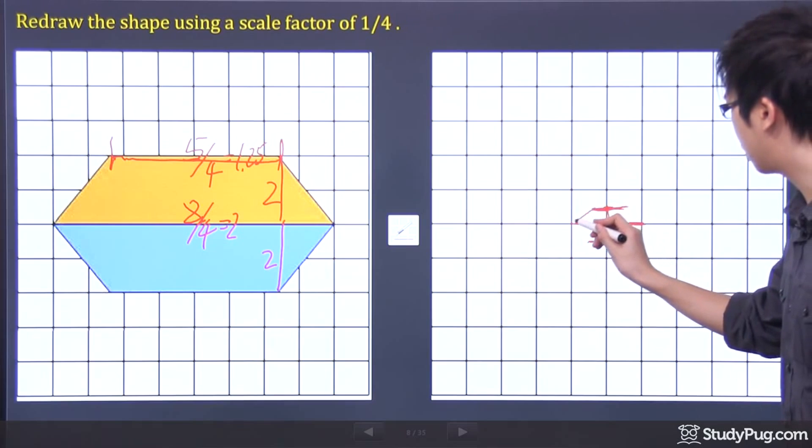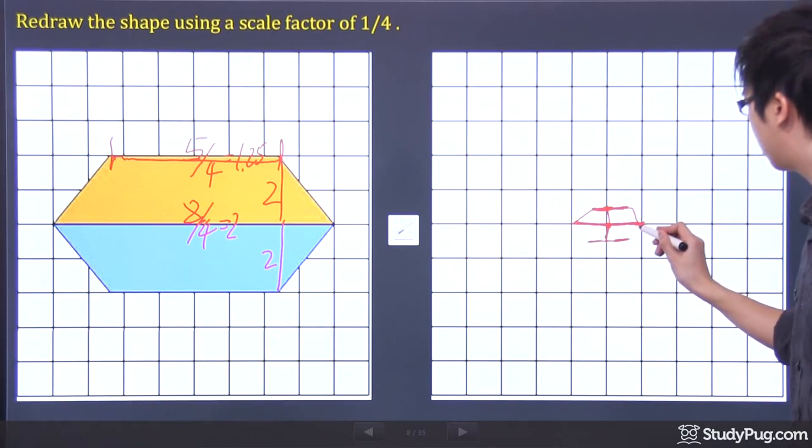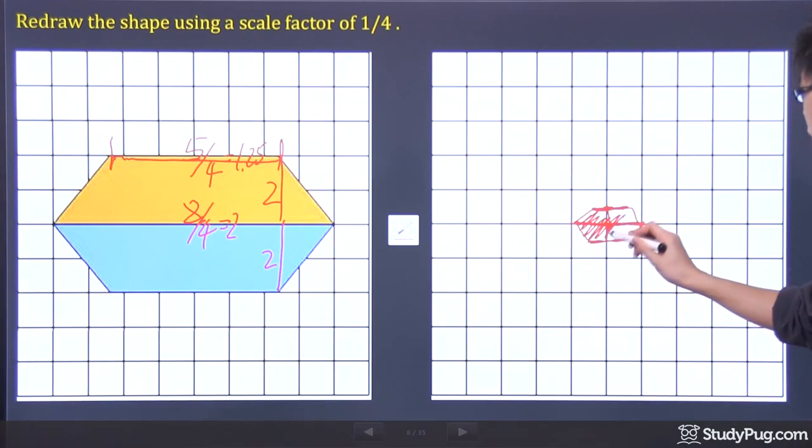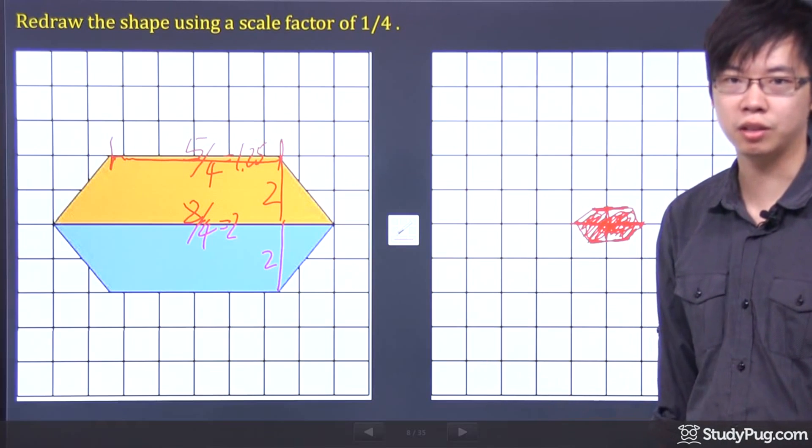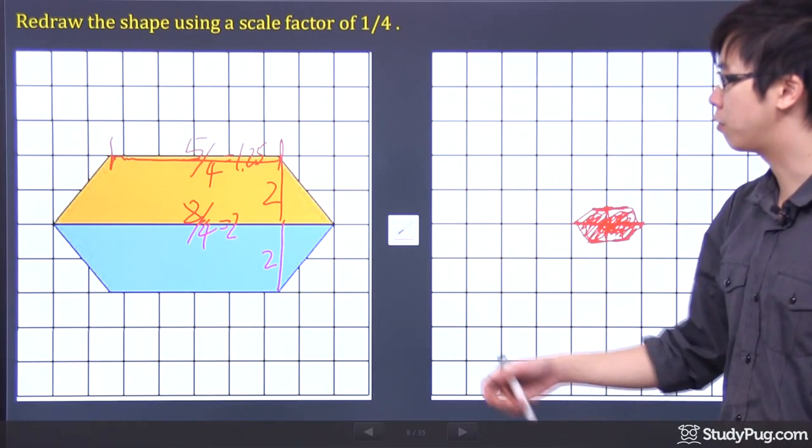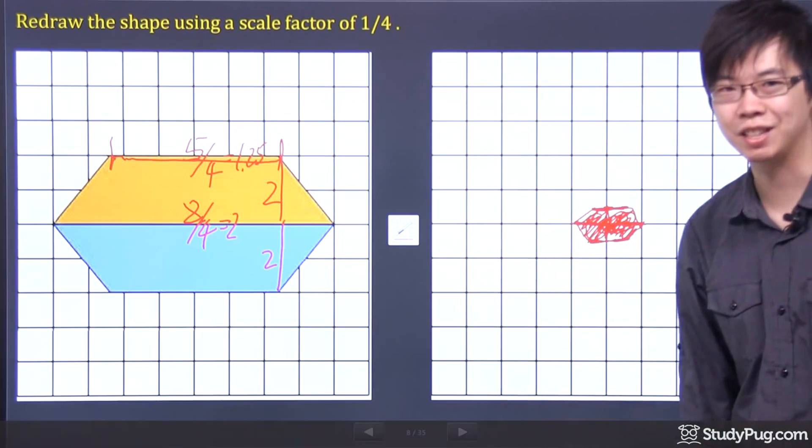So at the end, we're just going to put everything together and there you go. That is your new drawing if you multiply by 1/4. Looks kind of small, but nothing else we can do. Divide everything by 4, that's what you get. Thanks for watching.